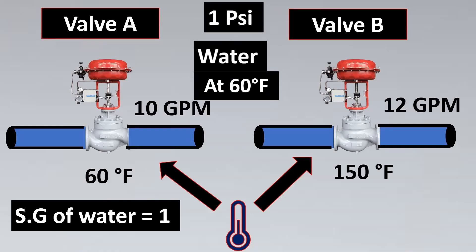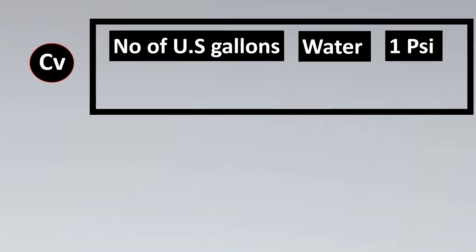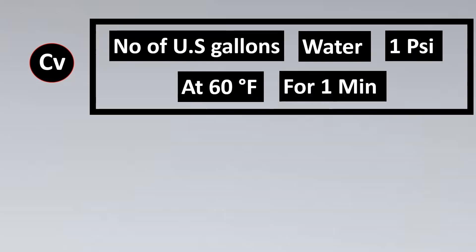So we have three standard parameters: a pressure drop of 1 PSI, water as the fluid, and a temperature of 60°F. With that, the definition of CV is as follows: CV is the number of US gallons of water that can flow through a valve with 1 PSI pressure drop at 60°F for 1 minute. This is the definition of CV.